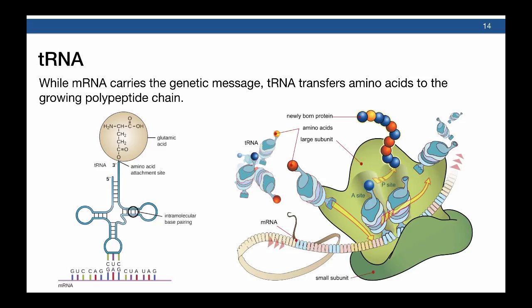In contrast to messenger RNA, transfer RNA, or tRNA, transfers amino acids to the growing polypeptide chain in the ribosome. Transfer RNA has a unique cloverleaf structure with two important parts: the first is the amino acid attached to the transfer RNA, and the second is the anticodon. This anticodon will match the messenger RNA strand and deliver a specific amino acid. The ribosome's job is to read the messenger RNA and assemble a growing polypeptide chain.